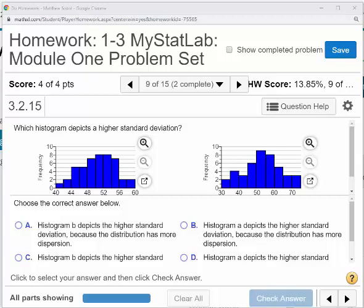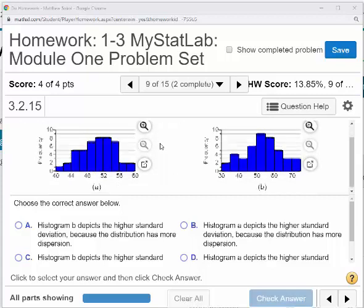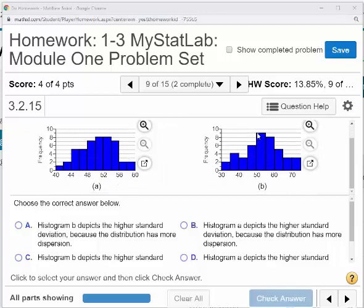All right, so question nine goes like this. You have these two histograms, and the question asks, which histogram depicts a higher standard deviation? And notice how this histogram looks somewhat bell-shaped, this one a little bit bell-shaped but not perfect, so maybe the shape here isn't what's going to give away which has a higher standard deviation.